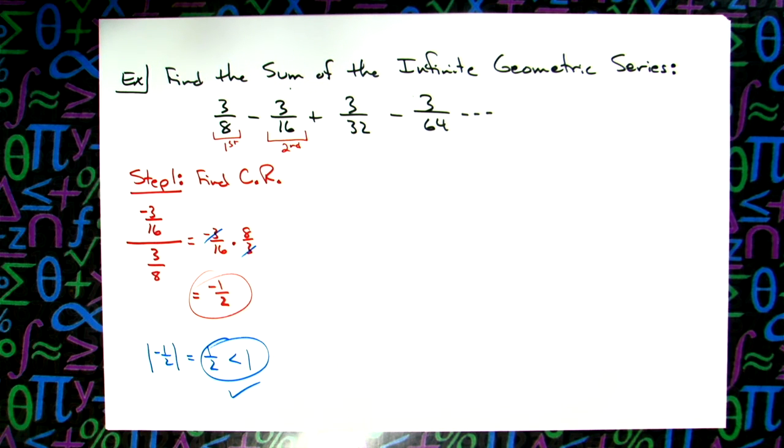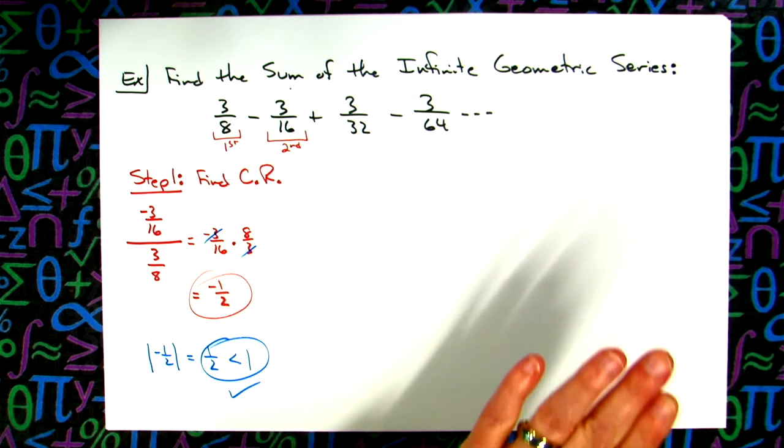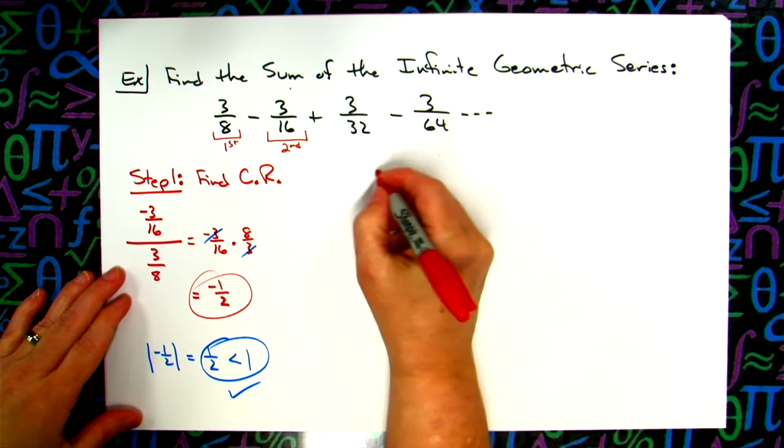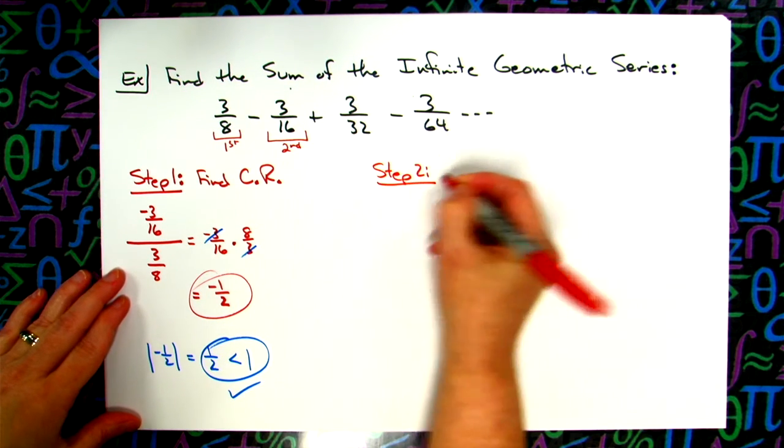So because it's less than 1, I can find the sum. Had the absolute value of that common ratio been greater than 1, I would have said it doesn't have a sum. So because it does have a sum, I can go to step 2 and find my sum.